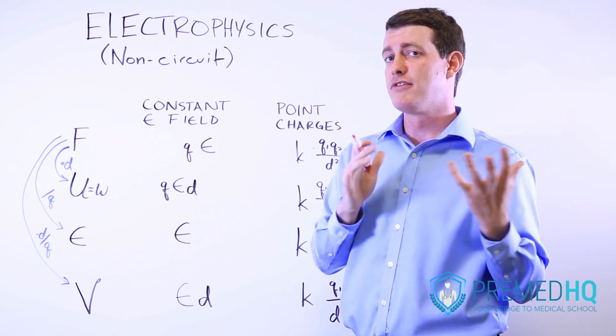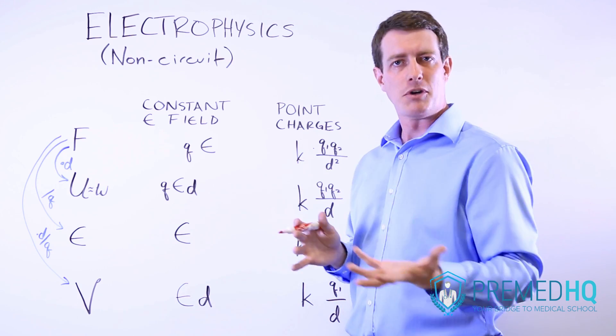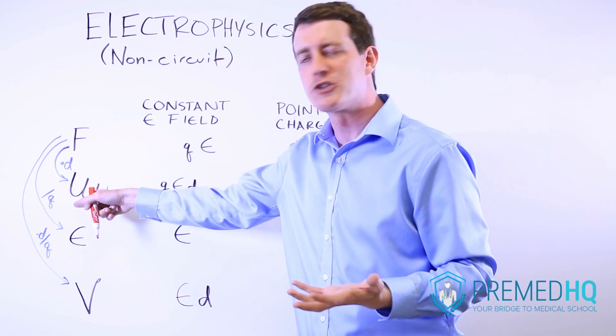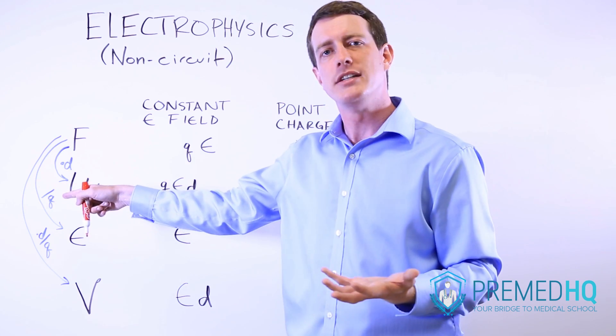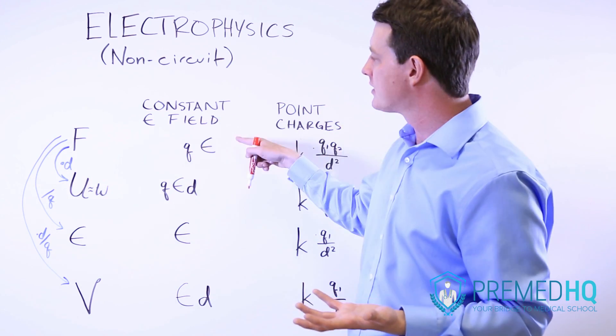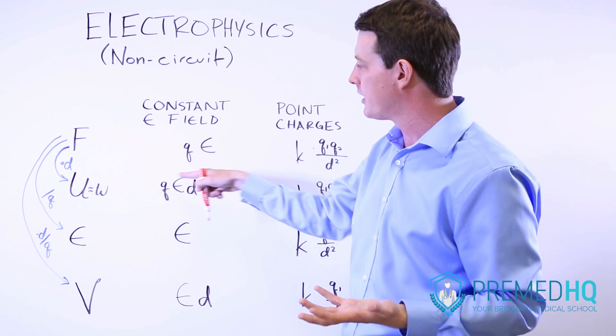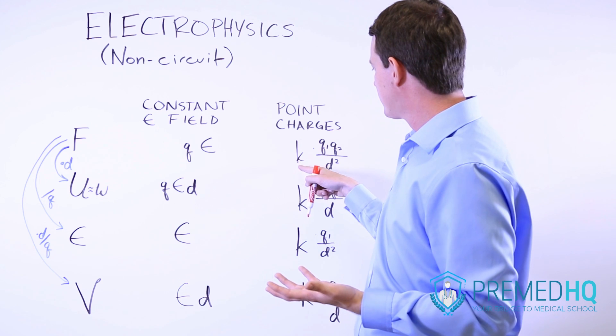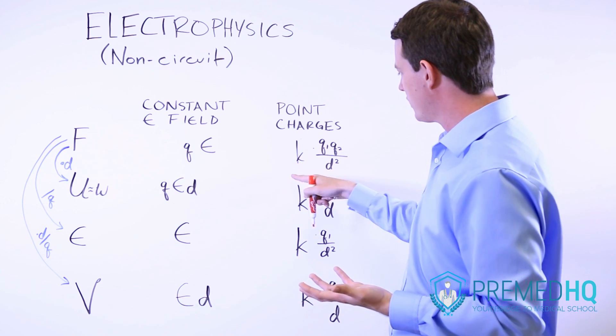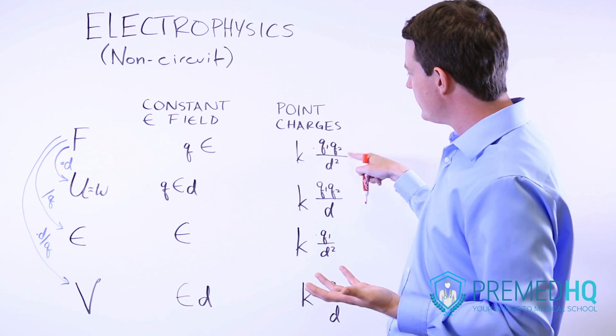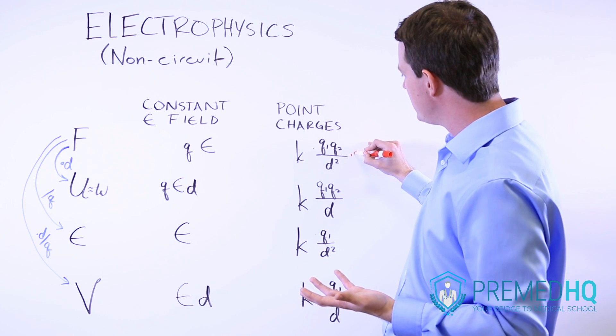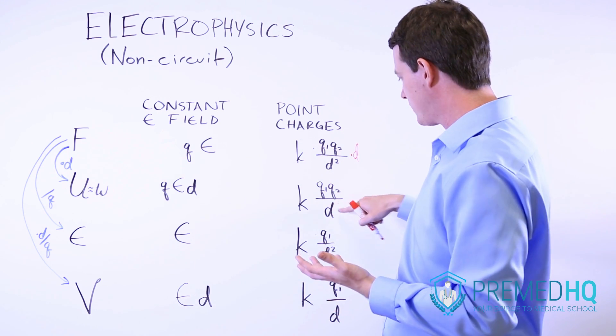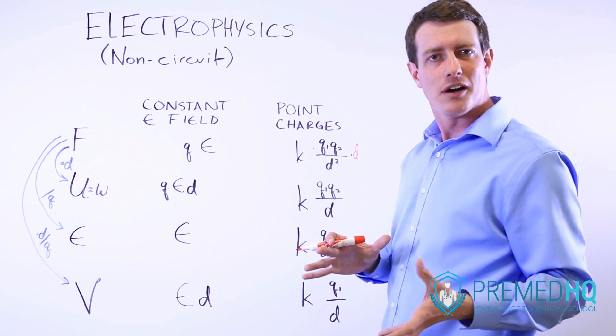Remember that to get from force to work, you just multiply by distance. And that's what you do here. To get from force to electrical potential energy, you multiply by distance. So if it's a constant electrical field, you're just going to be multiplying by distance. It's going to be QED. And if it's with a point charge, you're going to multiply that by D. And because you're multiplying by D here, that is going to take the squared out of the denominator. And it's just going to be divided by D rather than D squared.